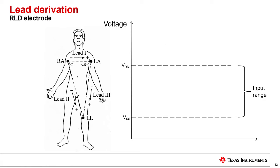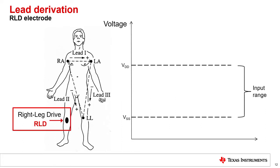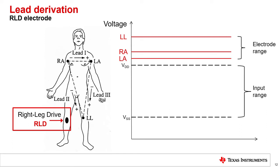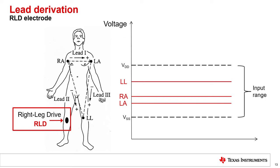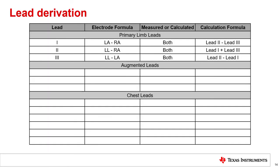In addition to the three primary electrodes, a fourth electrode is commonly used for DC-coupled ECG systems. This electrode is known as the right leg driver, or RLD. The common mode voltage of the human body is floating with respect to the ECG measurement system. Without a way to bias the body, the input signals from the electrodes may not be within the acceptable input range of the ADC. Typically, the voltage on each pin must be within the range of the ADC's power supply, VDD and VSS. The right leg drive electrode drives a voltage to the patient that will cause the DC level of the other electrodes to fall within the supply range of the ECG equipment so they can be measured properly. That covers the first group of ECG leads, the primary limb leads.